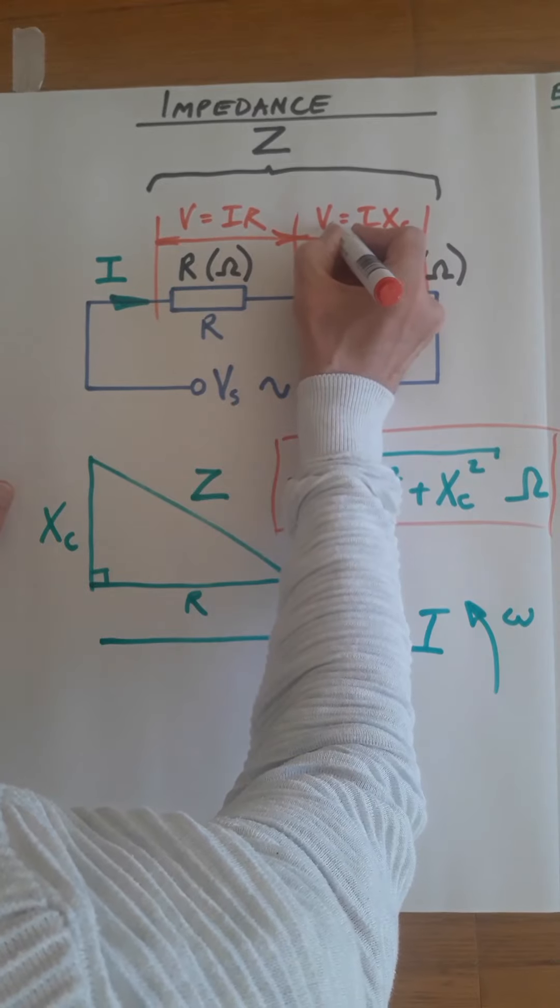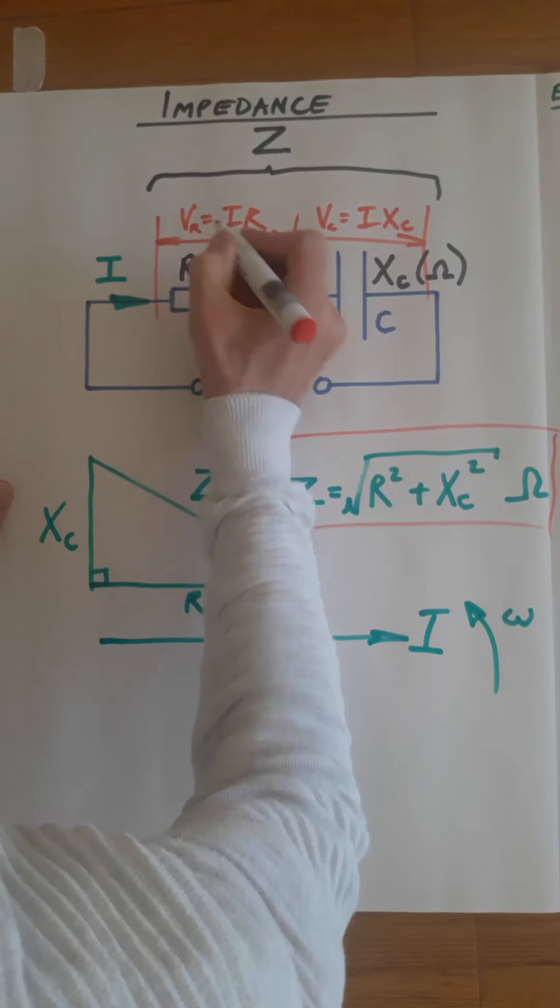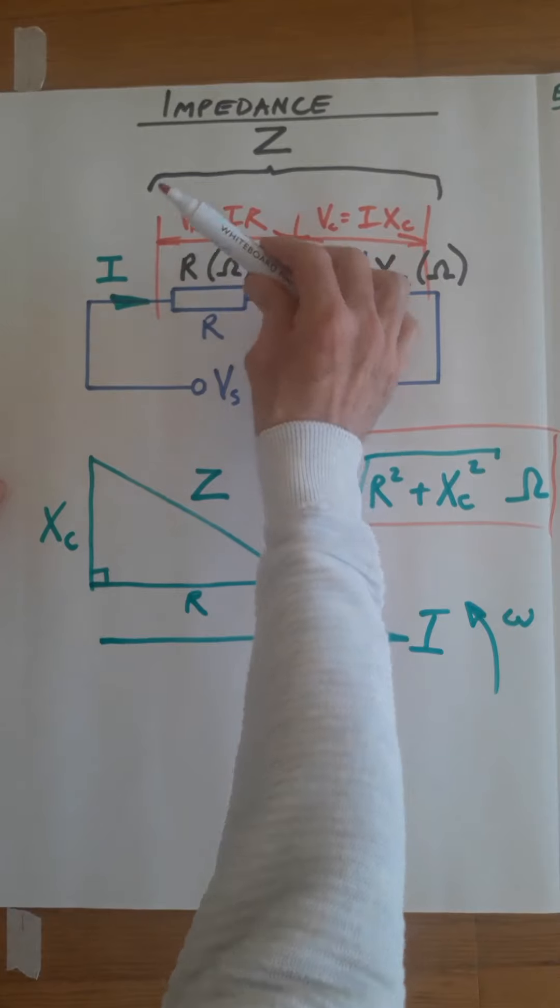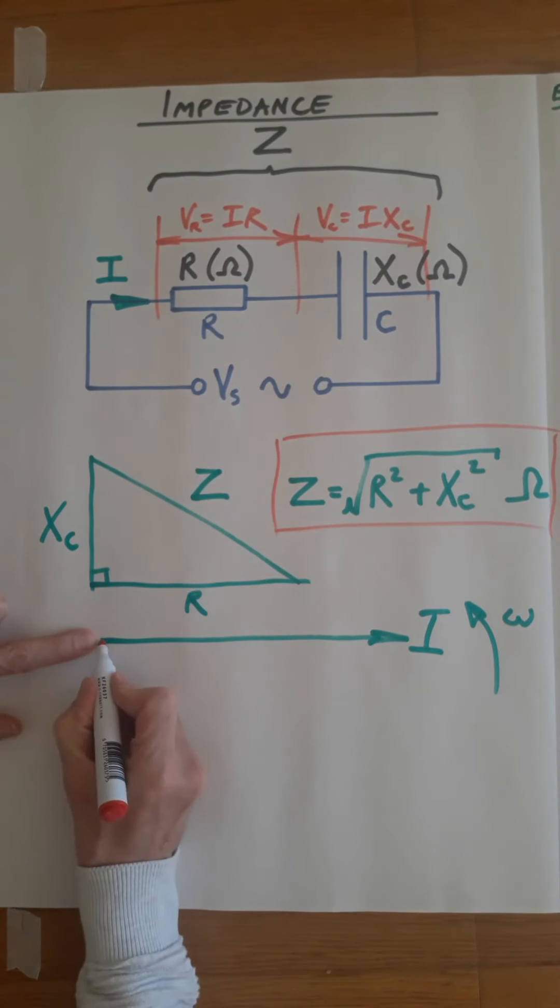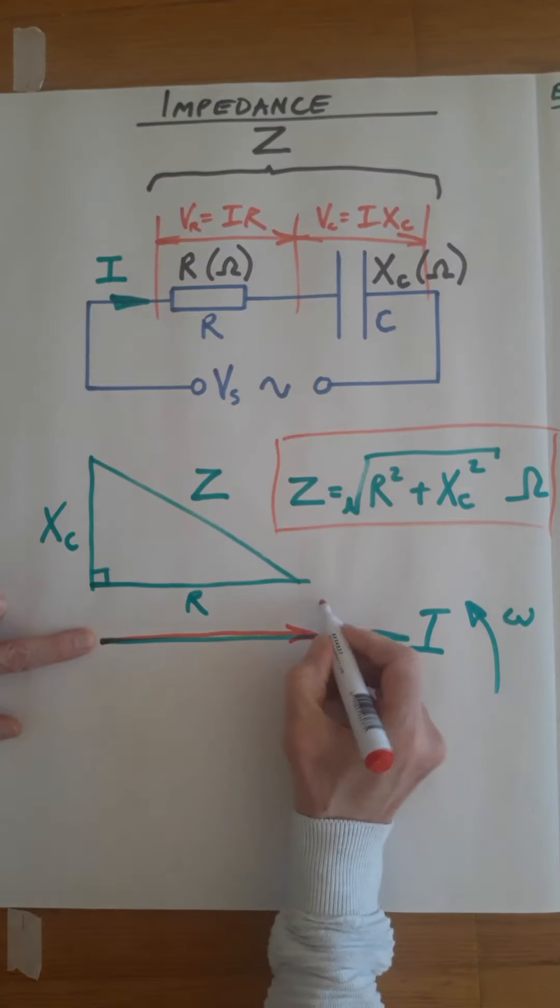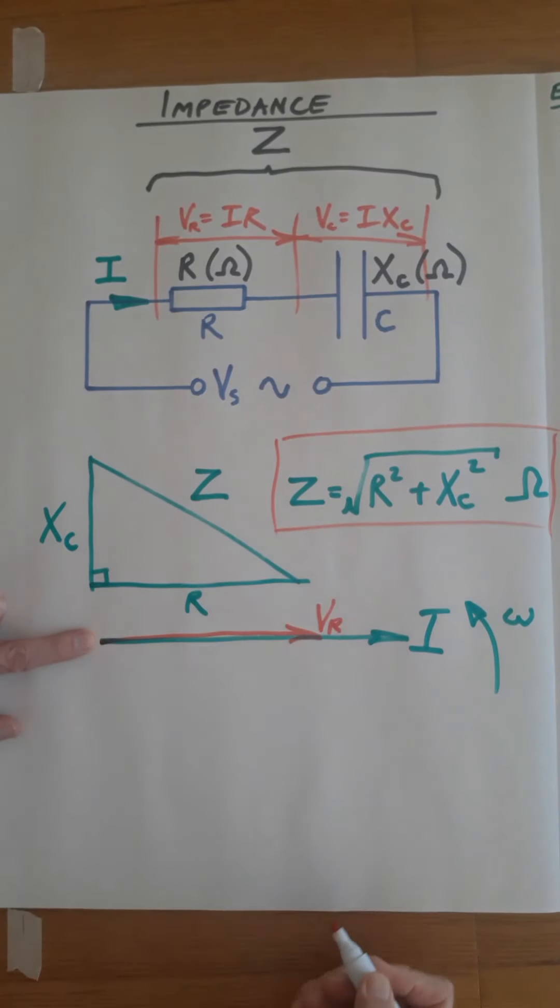The voltage across the resistor: voltage and current are in phase in a resistor, so the voltage across the resistor is there.